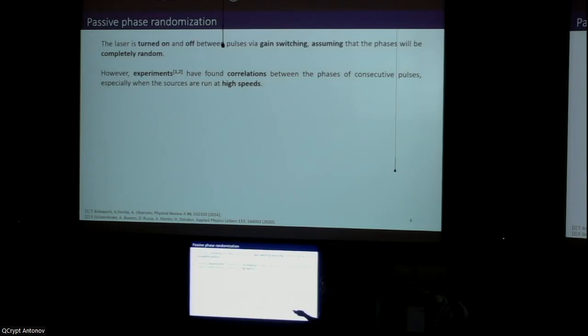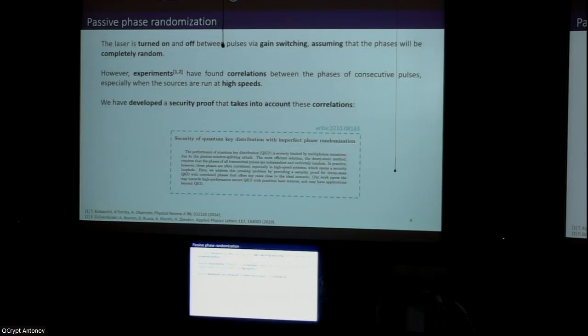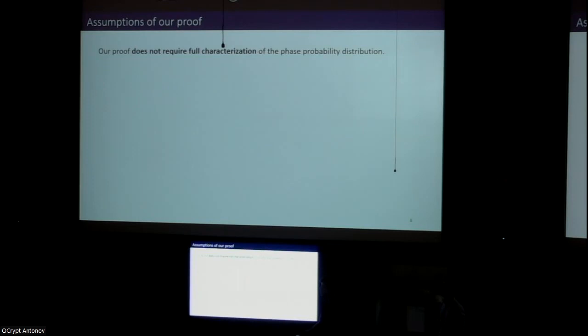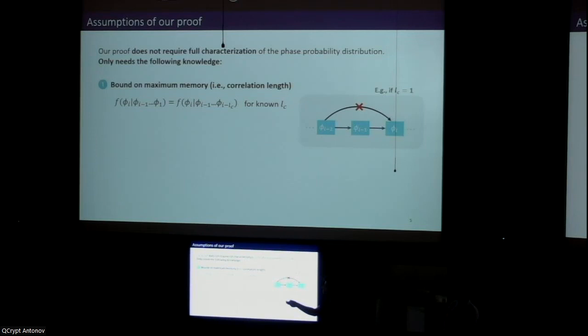Luckily, we have been able to develop a security proof that can guarantee security in the presence of these correlations. The assumptions of the proof are basically two. The first assumption is that the stochastic process that determines the value of the phases has a known maximum memory Lc. For example, in the simplest case in which Lc equals one, this means we have the guarantee that the value of this pulse cannot directly affect the value of this pulse, although it still can affect it indirectly through its effect on the value of this pulse.